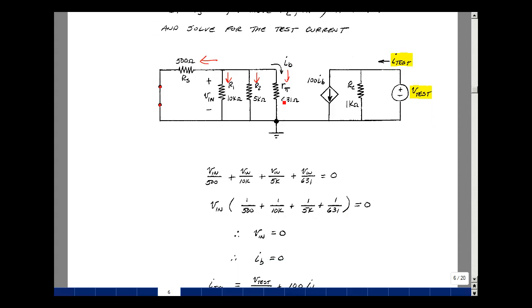That means the current I-sub-B, which is V-in divided by R-pi, or 631, is also going to be zero.